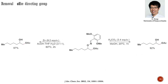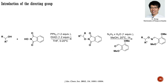Furthermore, they demonstrated that the directing group can be selectively removed under two different conditions, including basic hydrolysis and zinc-mediated reduction. Under these conditions, the newly introduced functional group remains intact. In this case, the introduction of the directing group was easier and took two steps: first, they substituted the hydroxyl group of the alcohol with N-hydroxyphthalimide, followed by deprotection of the amino group and the formation of a Schiff base with an aldehyde.